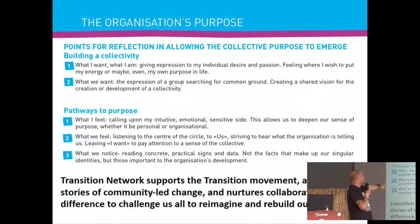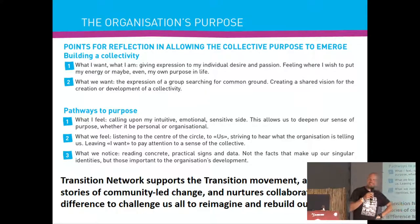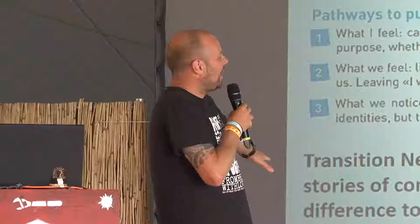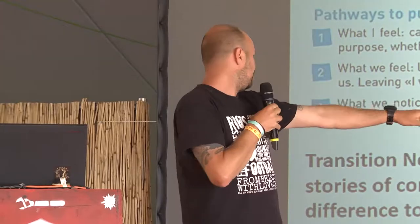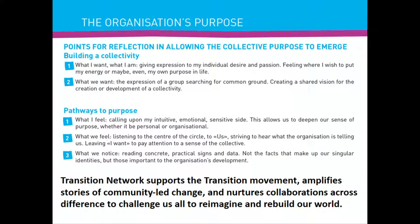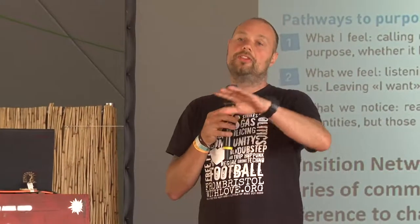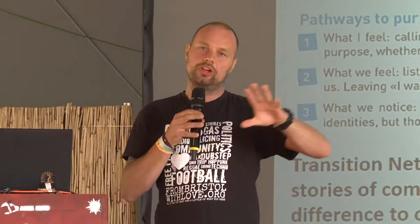We spent a lot of time at Transition Network coming up with our purpose — it was quite a painful process and took a long time. What we came up with was: 'Transition Network supports the Transition Movement, amplifies stories of community-led change, and nurtures collaborations across difference to challenge us all to reimagine and rebuild our world.' That short sentence probably took three to four months. What was great was that when we finally got there, everyone felt happy with it — which is really important: people need enough engagement so they don't feel dragged along by power politics.